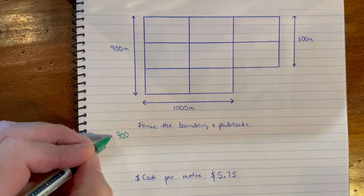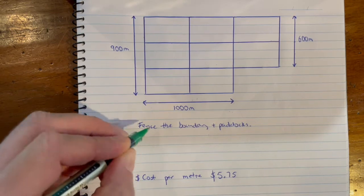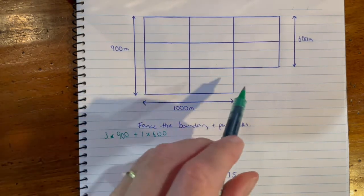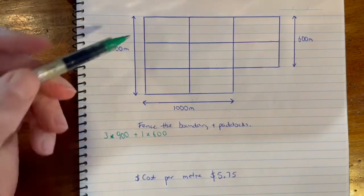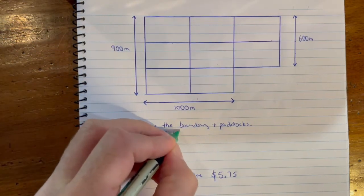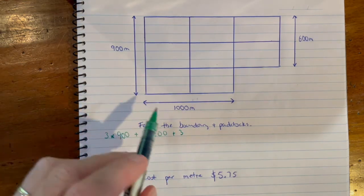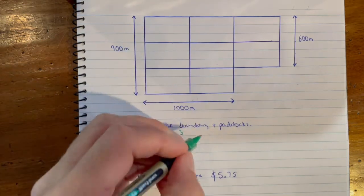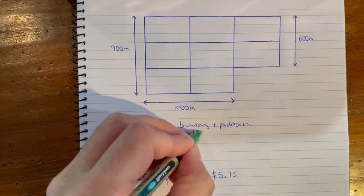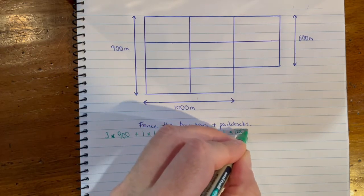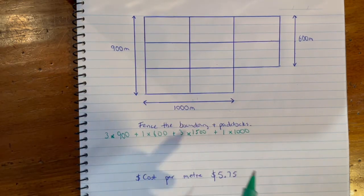You go 900 and there's three of those, and then add on the one that's 600. Then you could do the horizontal lines - there's one, two, three, and those ones are clearly, if that's a thousand, then that would be 1,500. So three of 1,500 and then plus one of 1,000, and you could add those up together.